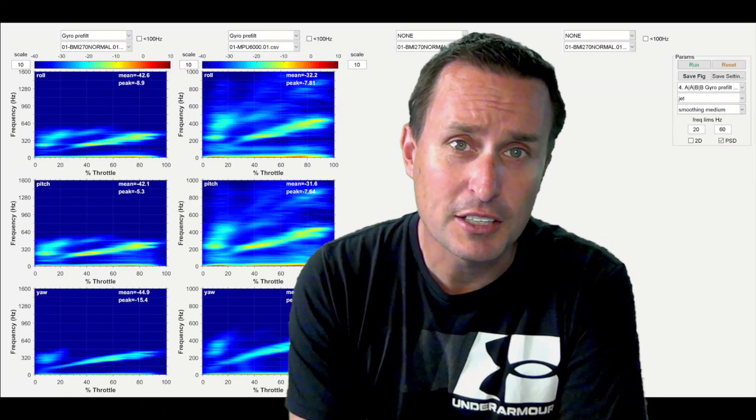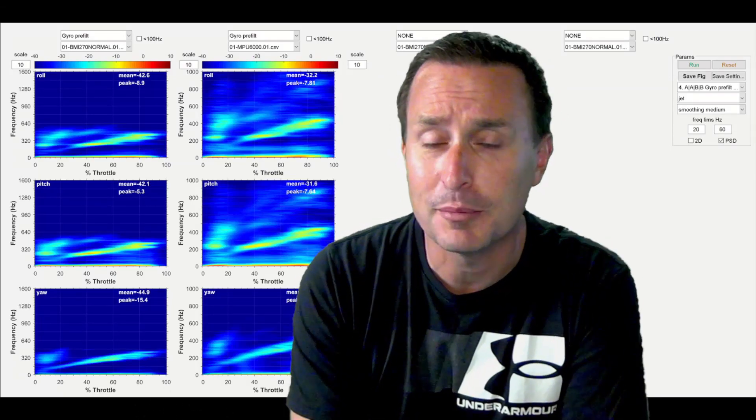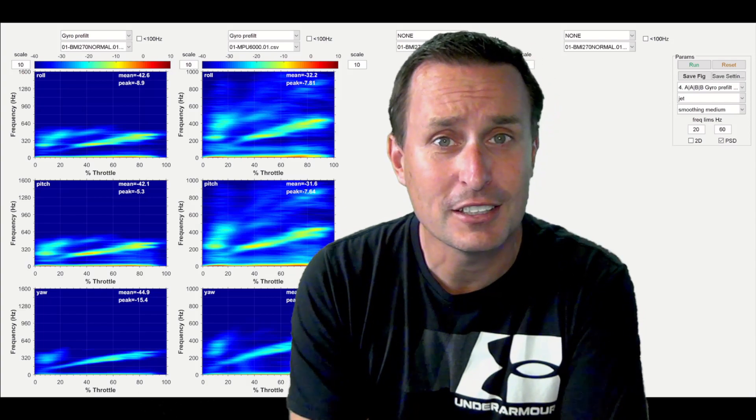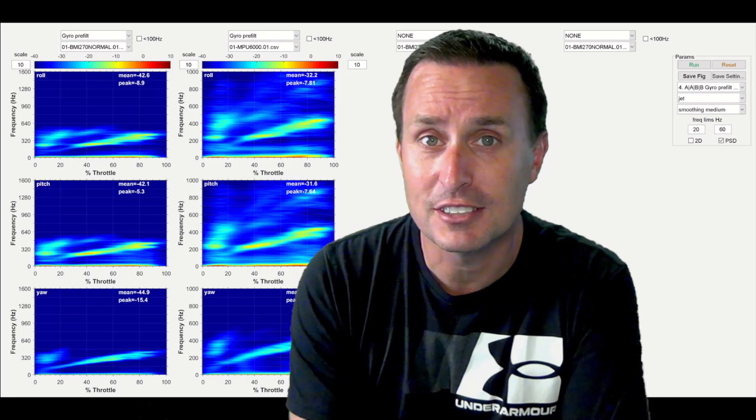Does the BMI270 compete with the MPU6000? Is the MPU6000 a little bit better, or is the BMI270 equivalent or even a little bit better than the MPU6000?